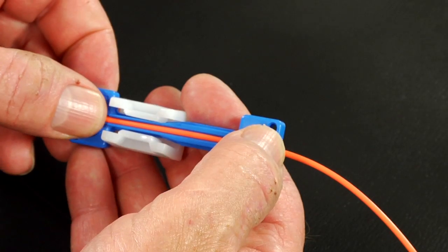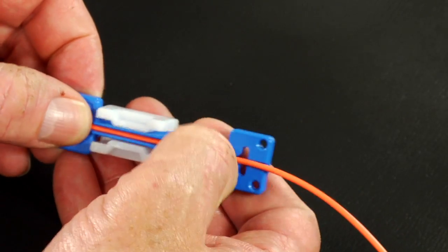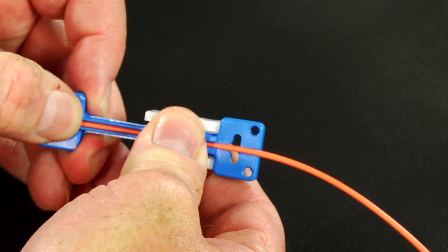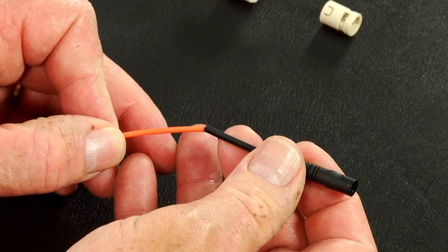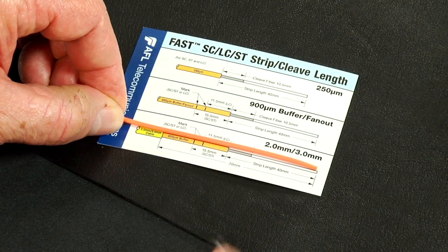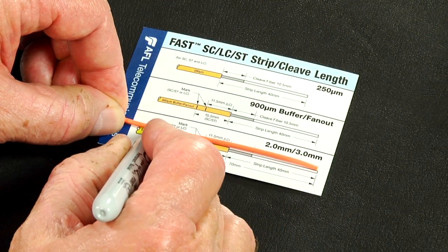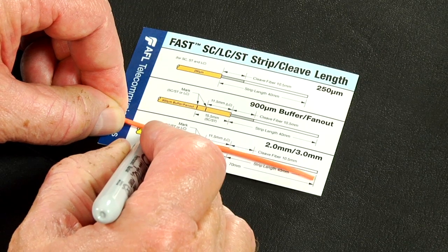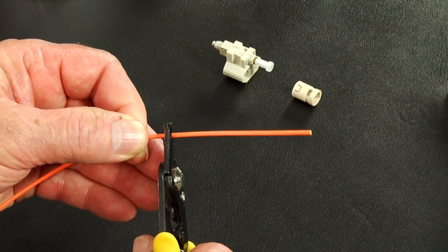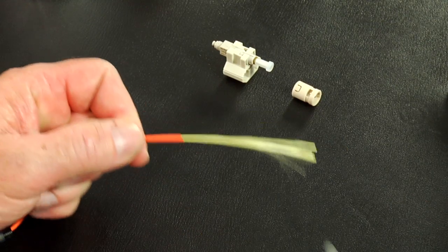Place the cable into the 2 millimeter clamp 12 inches away from the end of the cable. Slide the white U-piece to clamp the cable. Slide the 2 millimeter boot onto the cable. Refer to the strip template and mark the 2 or 3 millimeter cable at 65 millimeters from the end of the cable. Remove 65 millimeters of 2 or 3 millimeter cable jacket.